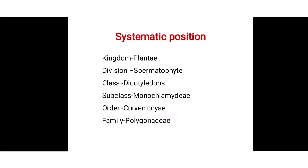Subclass Monochlamydae: the flower has a simple perianth which is usually sepaloid or incomplete. Perianth means the calyx and corolla do not much differ in shape and color — they are collectively known as perianth. The calyx and corolla are not distinguished but are fused together, so that structure is called the perianth. There are two portions: sepaloid and petaloid. Sepaloid means they are green in color and resemble sepals. Petaloid means the sepals are bright-colored and resemble petals. In Monochlamydae, the perianth is collectively joined as sepaloid.